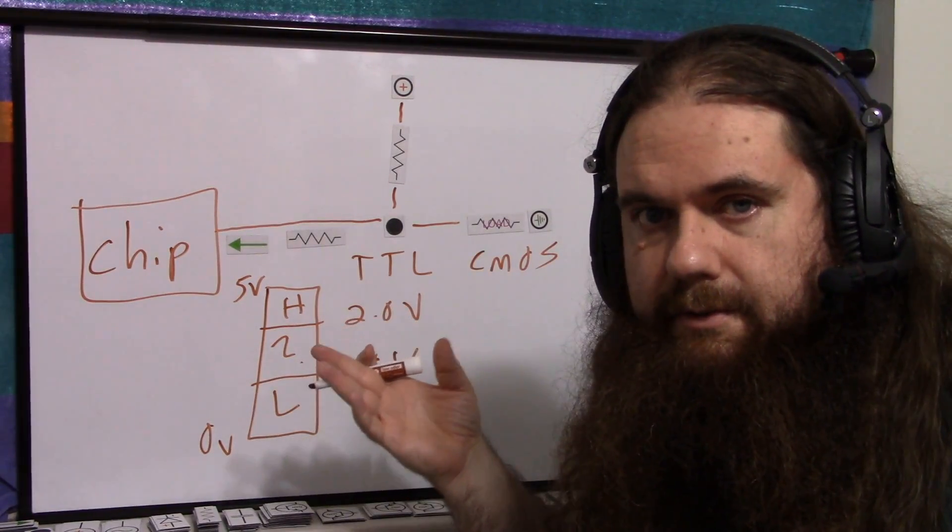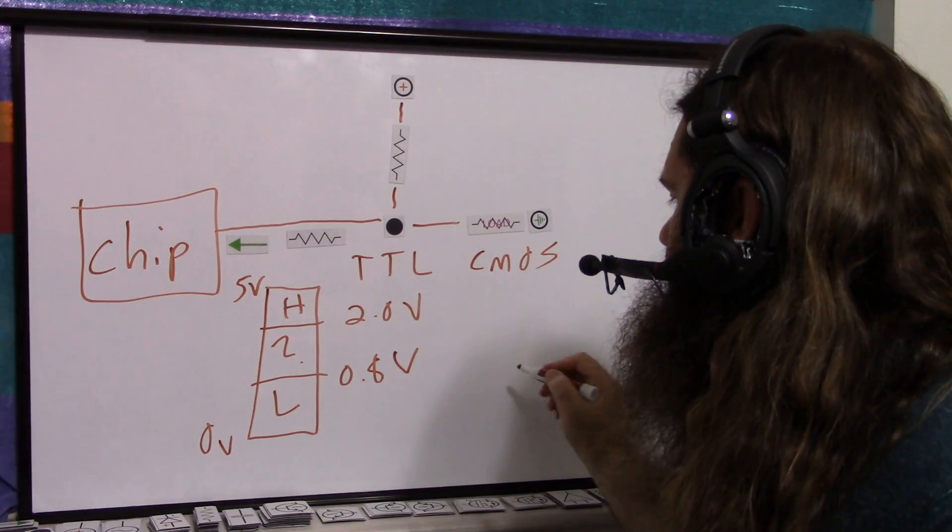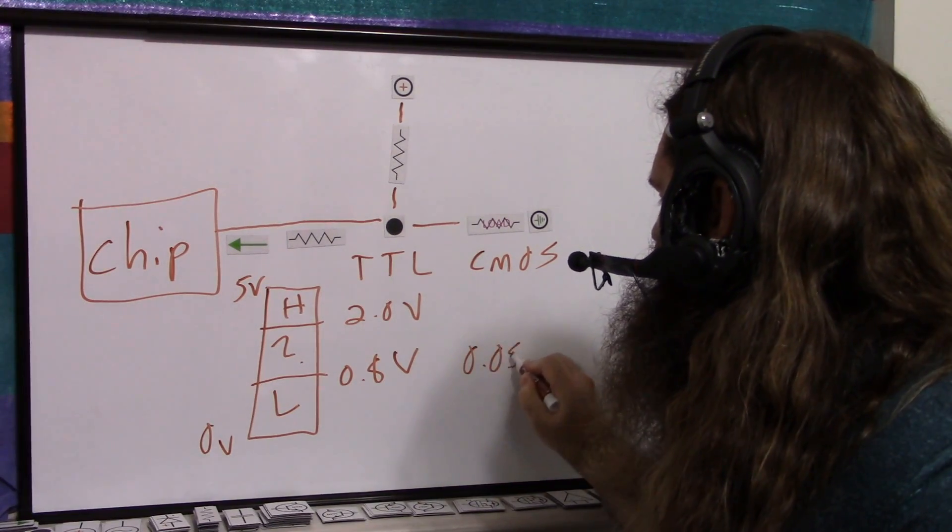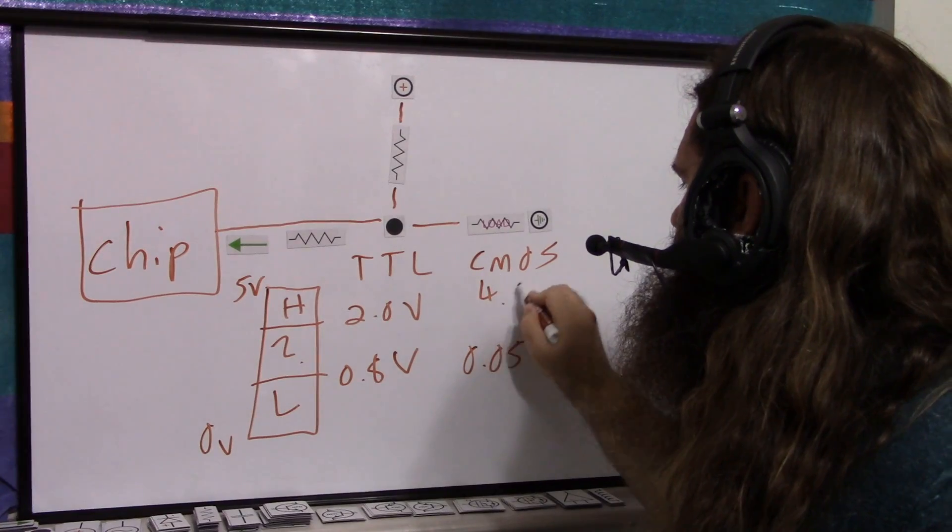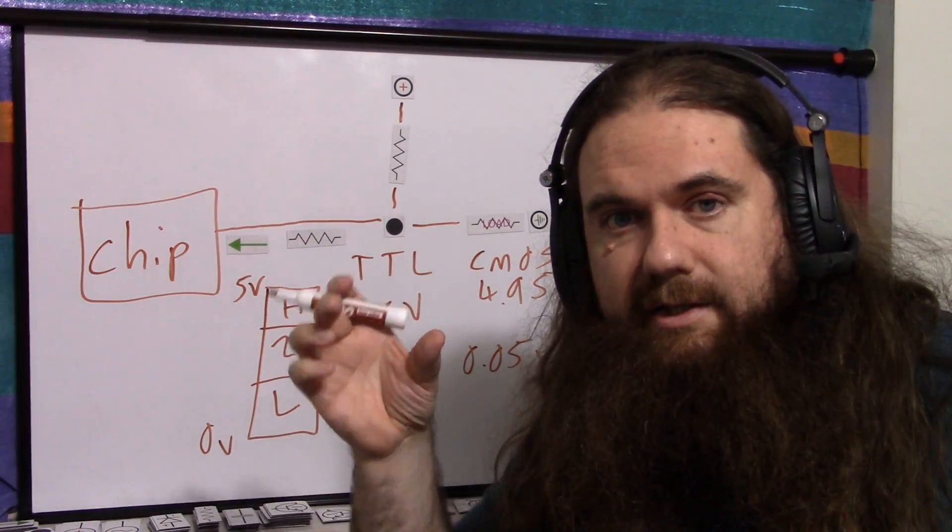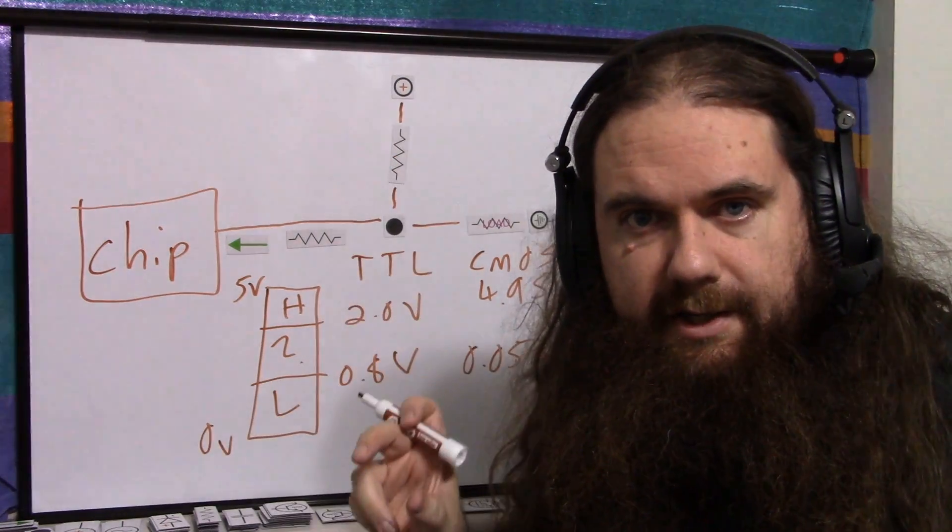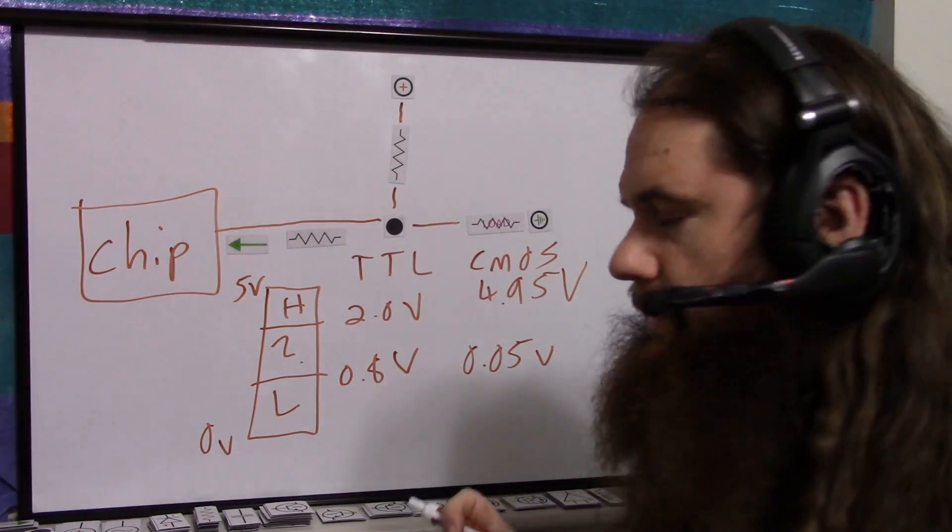CMOS, the one we're used to for normal computers, is something like 0.05 volts here, and 4.95 volts here. It's expecting, basically, the rail with a tiny smidgen off, a very tight window. However,